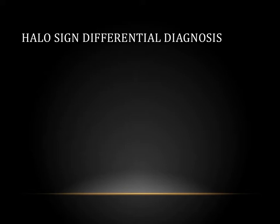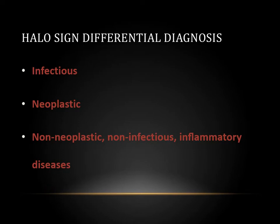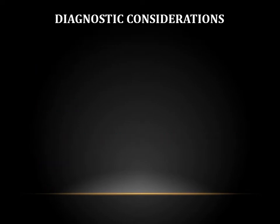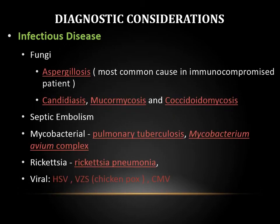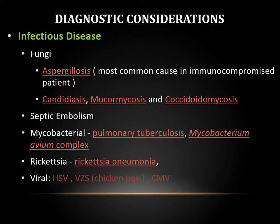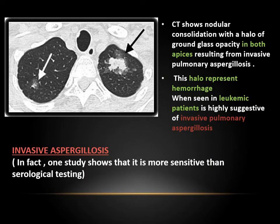On further study, it was found there are more other causes. Through a thorough study, the differential diagnosis has broader entities — either infectious, neoplastic, or inflammatory. Starting with infectious causes, the most common is aspergillosis, especially in immunocompromised patients such as those with HIV or leukemia. It can also be seen in other fungal infections, septic emboli, mycobacterium such as TB or mycobacterium avium, and in some rickettsial and viral infections.